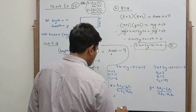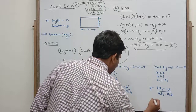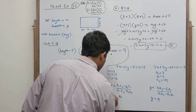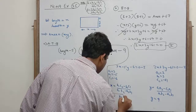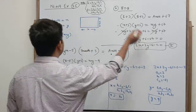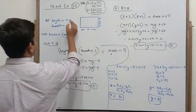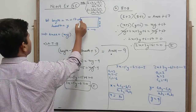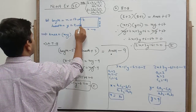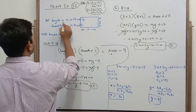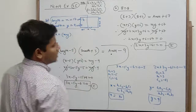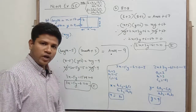Substituting all these values, we get x equals 17 and y equals 9. So the length is 17 units and breadth is 9 units. That is the final answer.